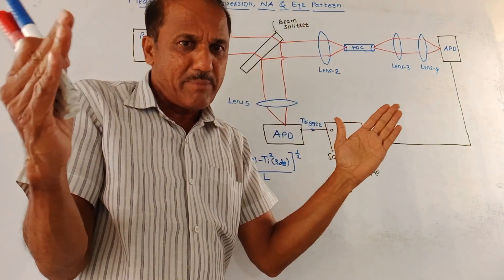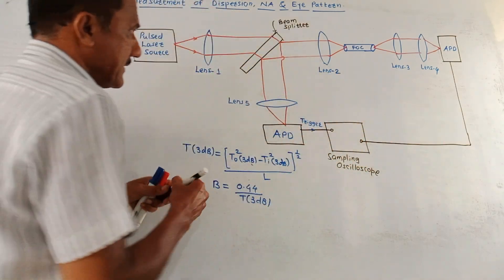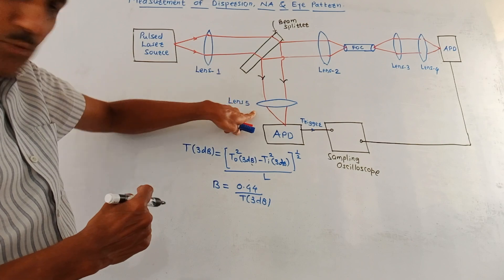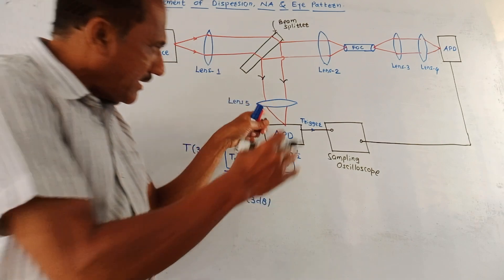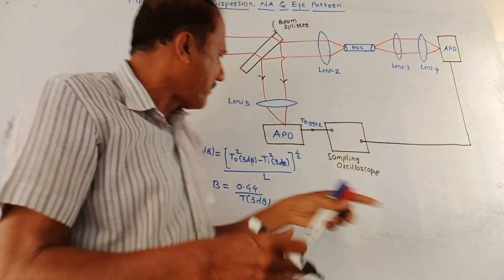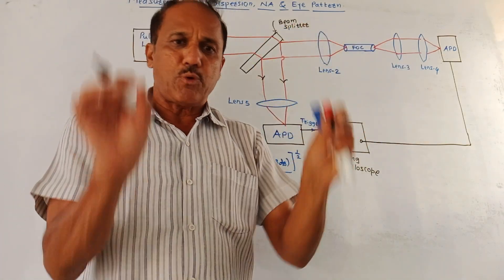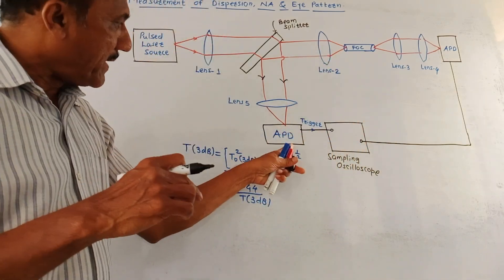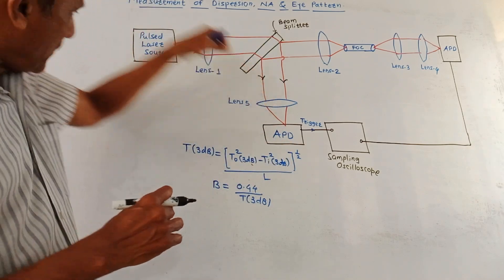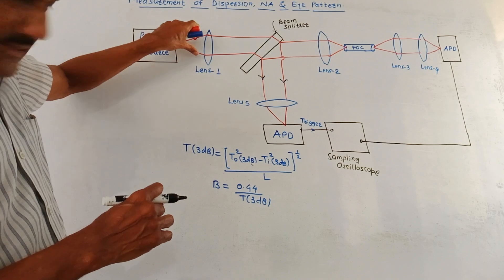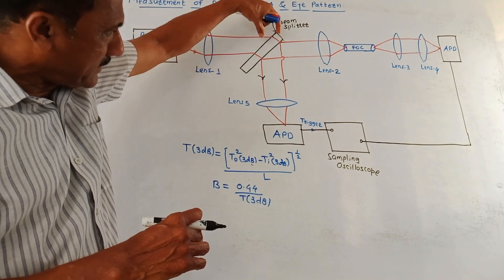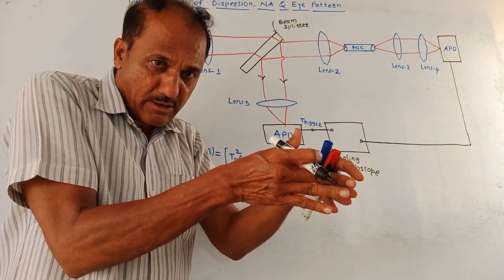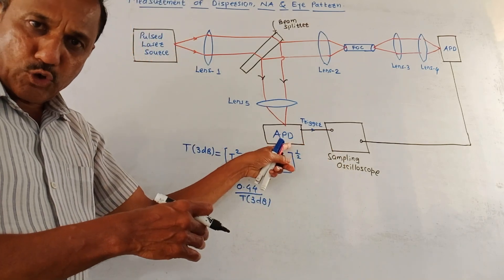The beam splitter splits the beam into two portions. One portion comes out from the beam splitter and is directed to lens 5. Lens 5 is used to focus the light beam on the APD — APD stands for avalanche photodetector. So the incoming light generated from the pulsed laser is applied to lens 1, then through the beam splitter it is split, applied to lens 5, which focuses that light beam on the APD.